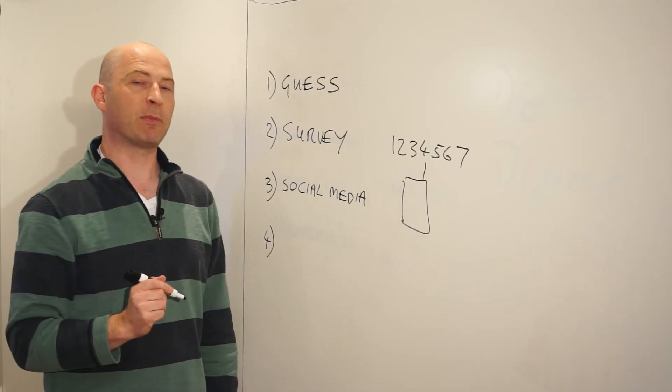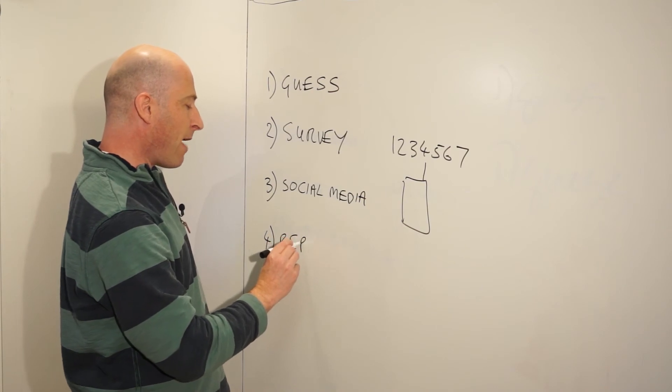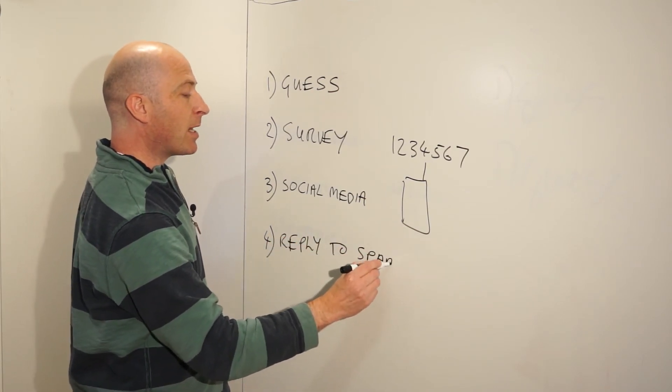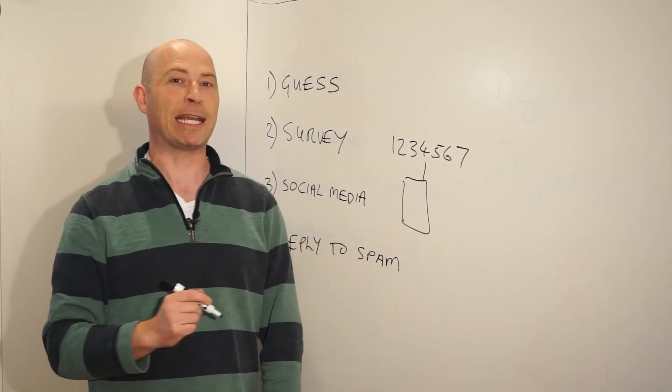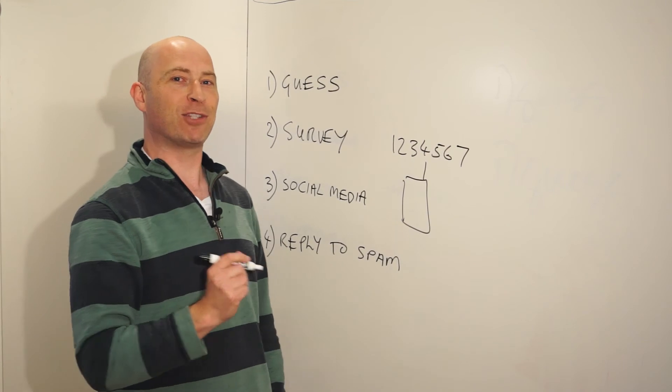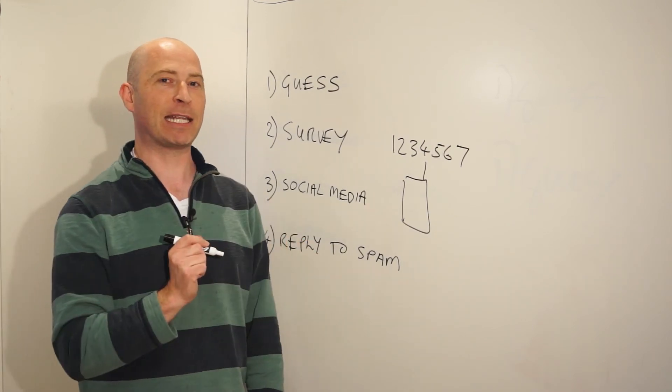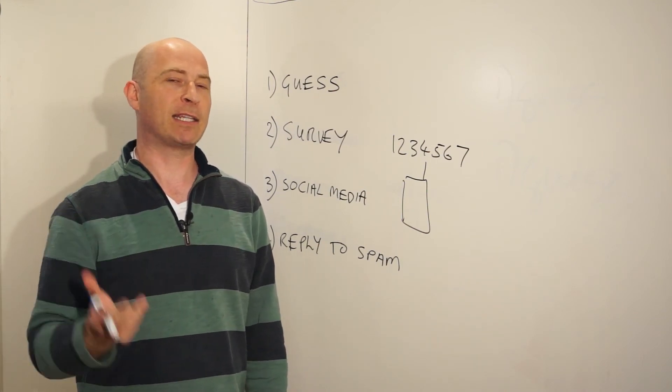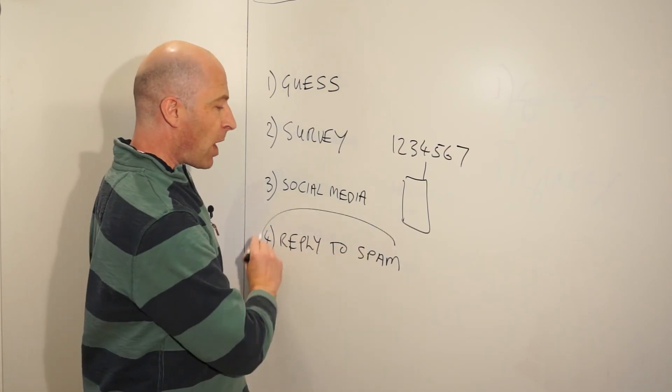The fourth way that you can get spam on your mobile phone is by replying. If you ever reply to a spam message, even if you just say go away, don't send me a spam message, you're almost guaranteed to get a lot more spam after that point. It usually has the opposite effect. Don't reply to spam messages. That's telling the spammer that you're there and you're not just a phone number that accepts messages but there's nobody using it. So don't ever reply to spam messages.